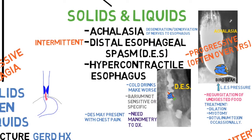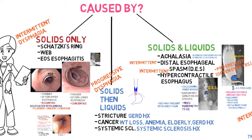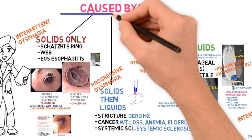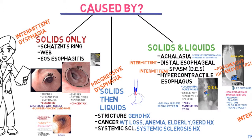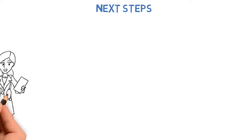Hypercontractile esophagus is intermittent. The key question is: what is this caused by? That's how we're going to make the diagnosis. Let's move on to the next steps.